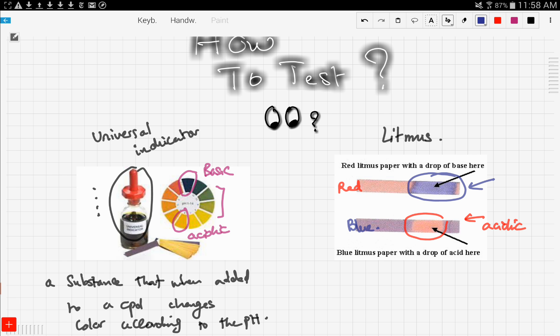So this is how we test for the acidity and basicity using litmus paper. So let's go over that one more time.